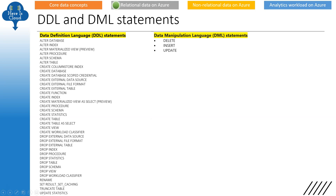DDL is data definition language and DML is data manipulation language. Make sure you remember the difference and the examples. Delete, insert, and update — when you are actually manipulating the data, that is DML. On the other hand, when you define the data structure or tables, that is DDL — commands like ALTER, CREATE, DROP, RENAME, etc. are DDL commands. Make sure you can identify which command is DML and which is DDL.